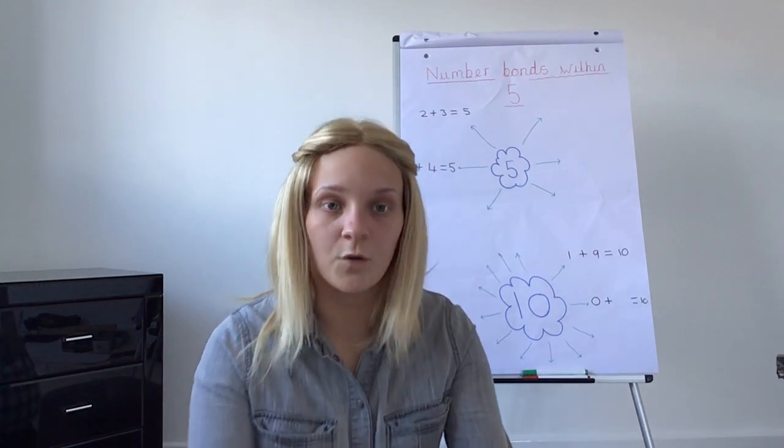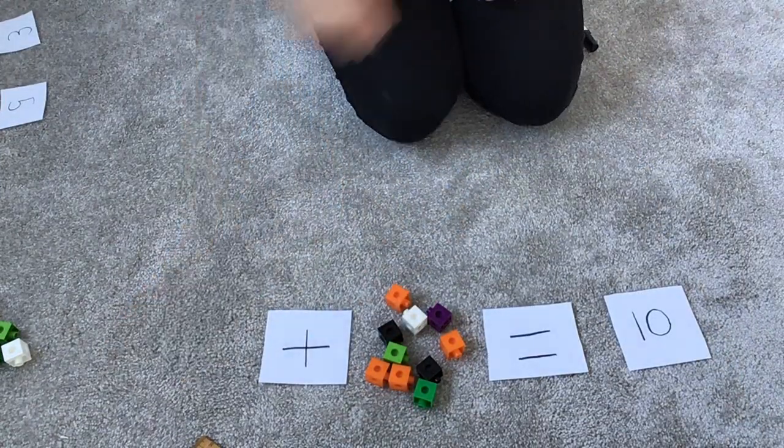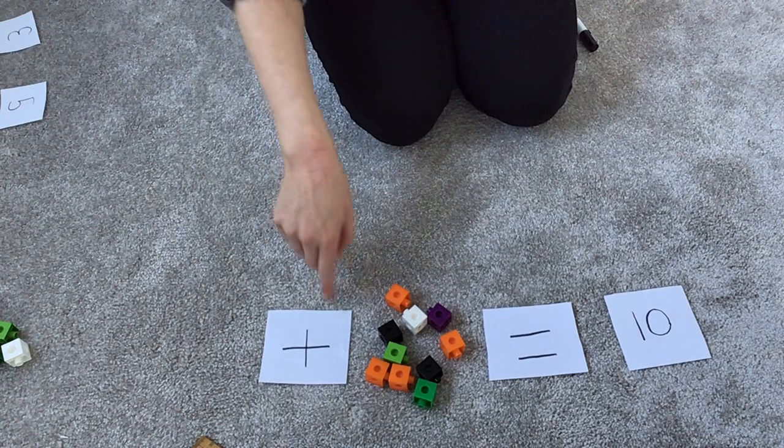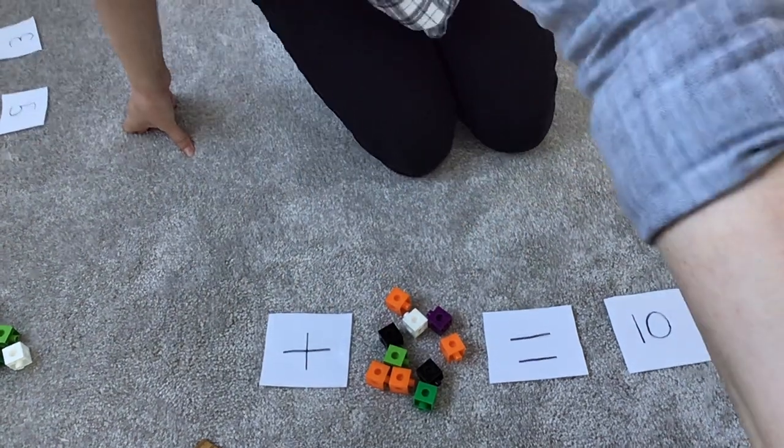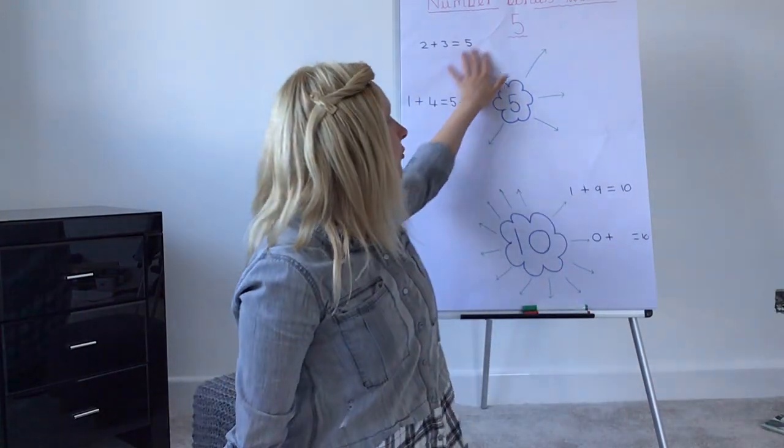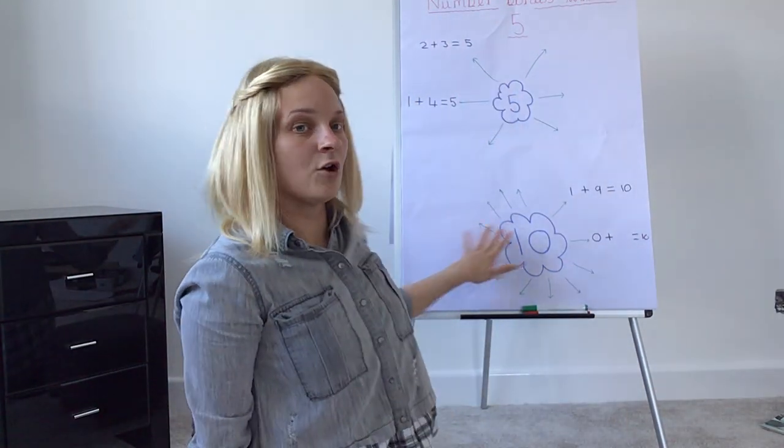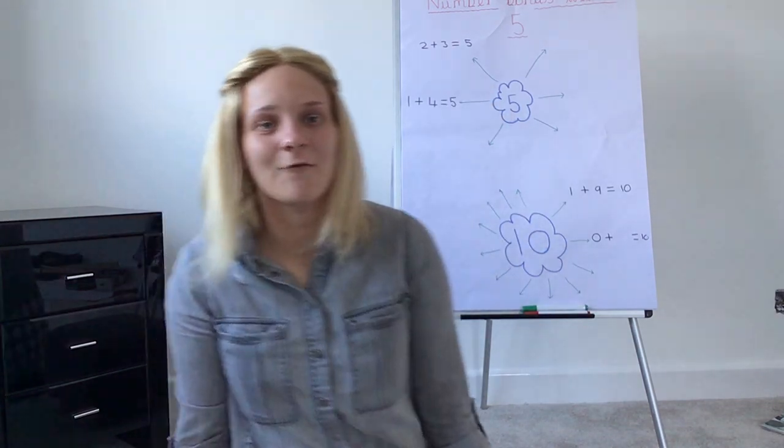That one's really easy. I'm not going to say that one. You should just know that one in your head. If not, work it out with your cubes. Go back. Zero means nothing. You've got nothing add ten equals... You should know that one's super easy, so please don't forget that one. I want you to find all the number bonds within five, all the number bonds within ten, and show them in a nice spider diagram for me.